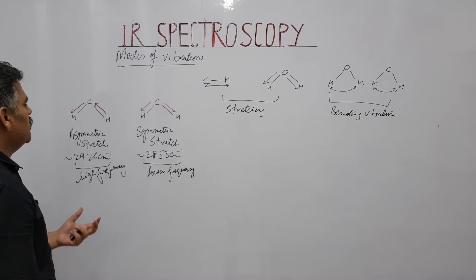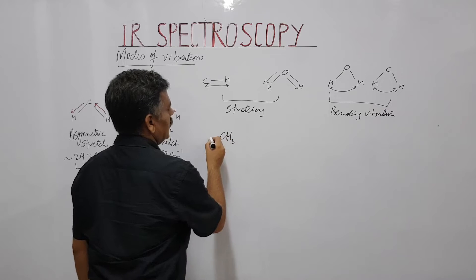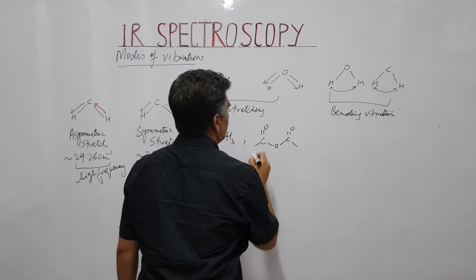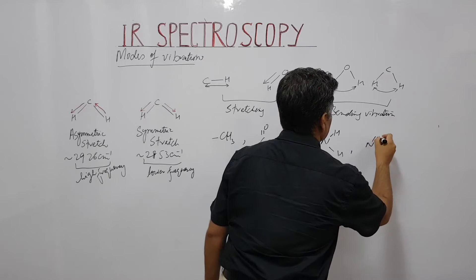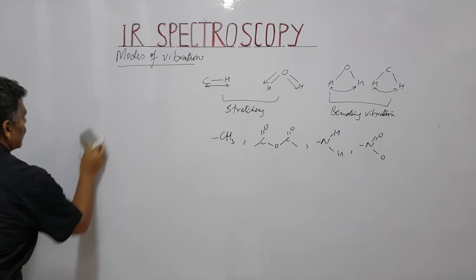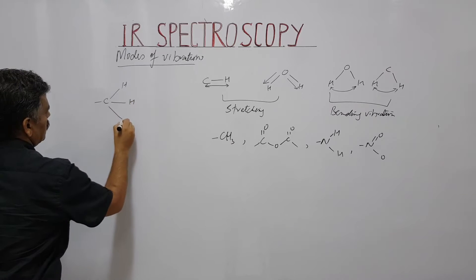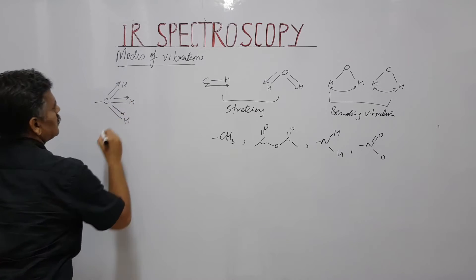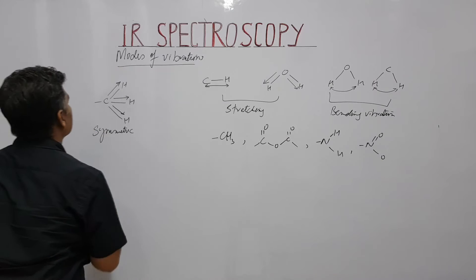Let us discuss more examples to elaborate symmetric and asymmetric stretching. Consider methyl (CH3) — carbon attached to three similar hydrogen atoms — anhydride, primary amino (NH2), and nitro groups. For methyl, when all three C-H bonds stretch simultaneously inward or outward, it is symmetric stretch.